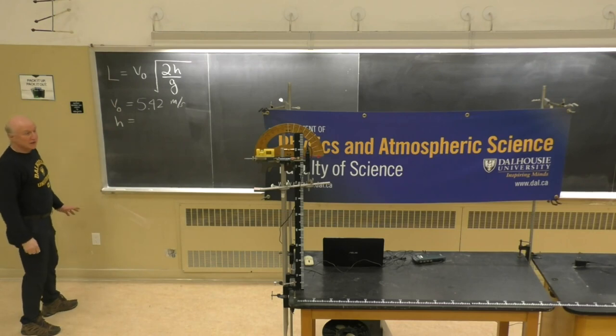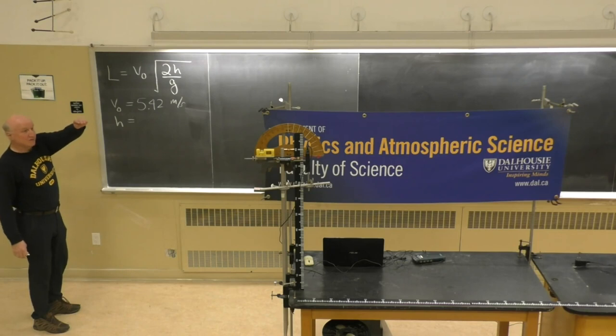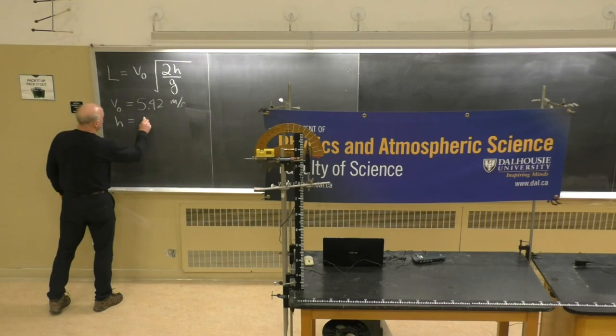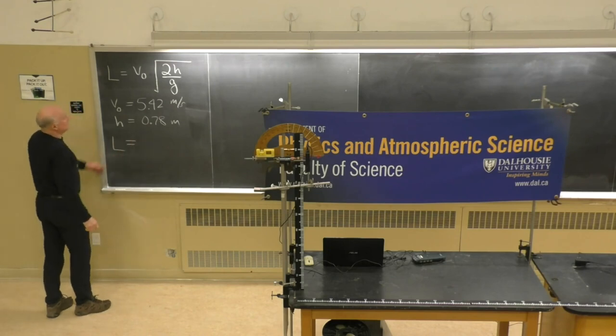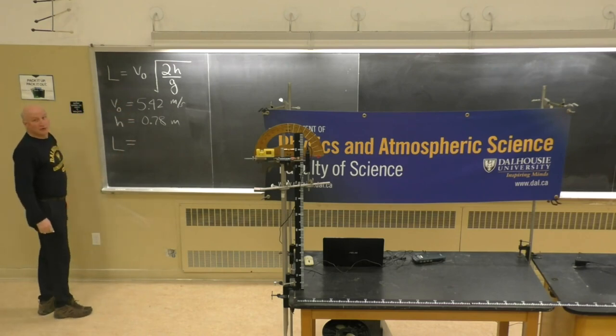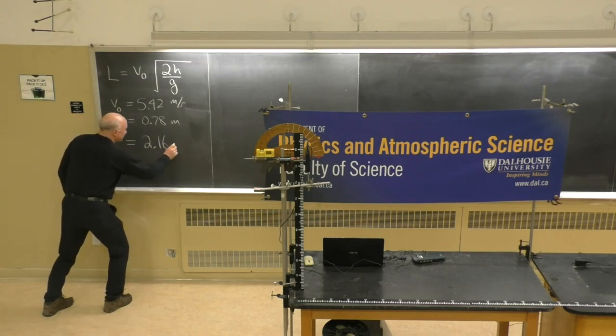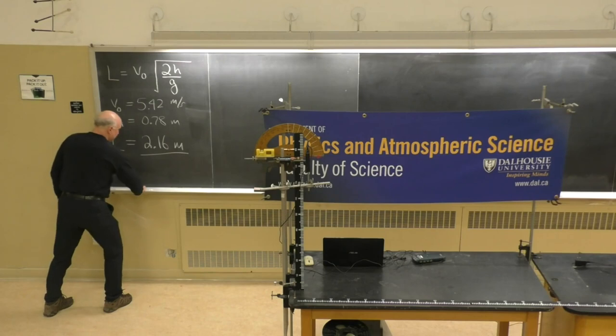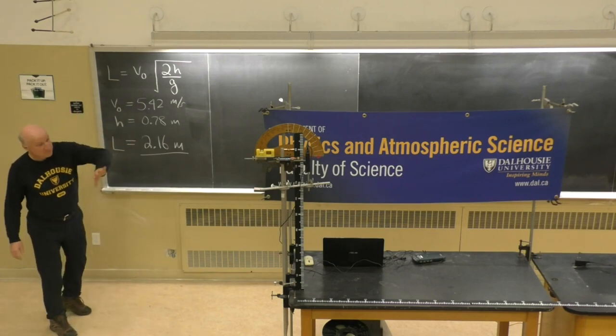The height of the light bulb above the table, subtracted from the height of the ball above the table, the height that we need is 0.78 meters. So we can calculate L. If you put all these numbers into the formula and use your calculator, you get L equals 2.16 meters. So we need to place our target 2.16 meters away from the gun.